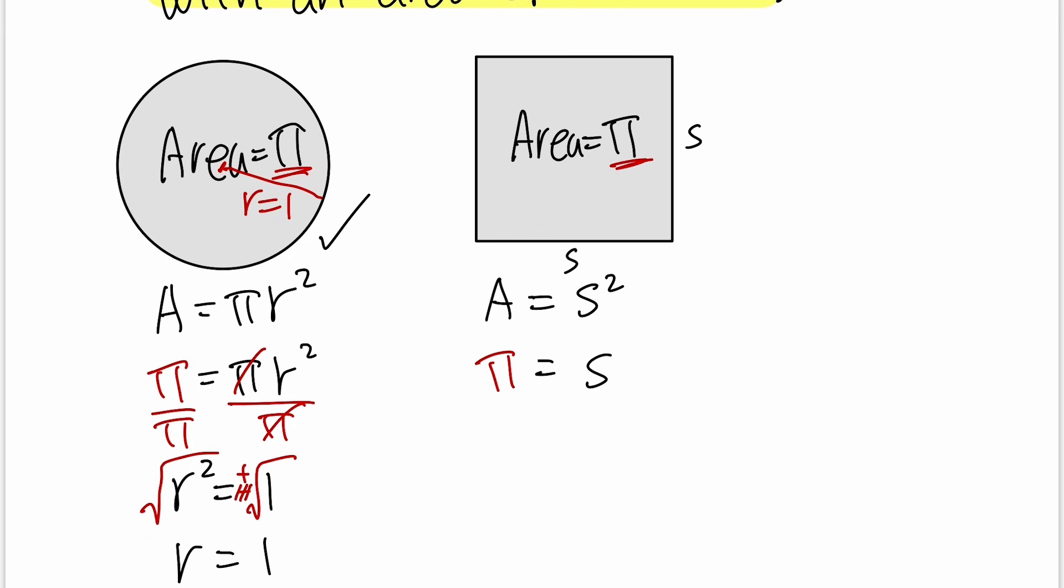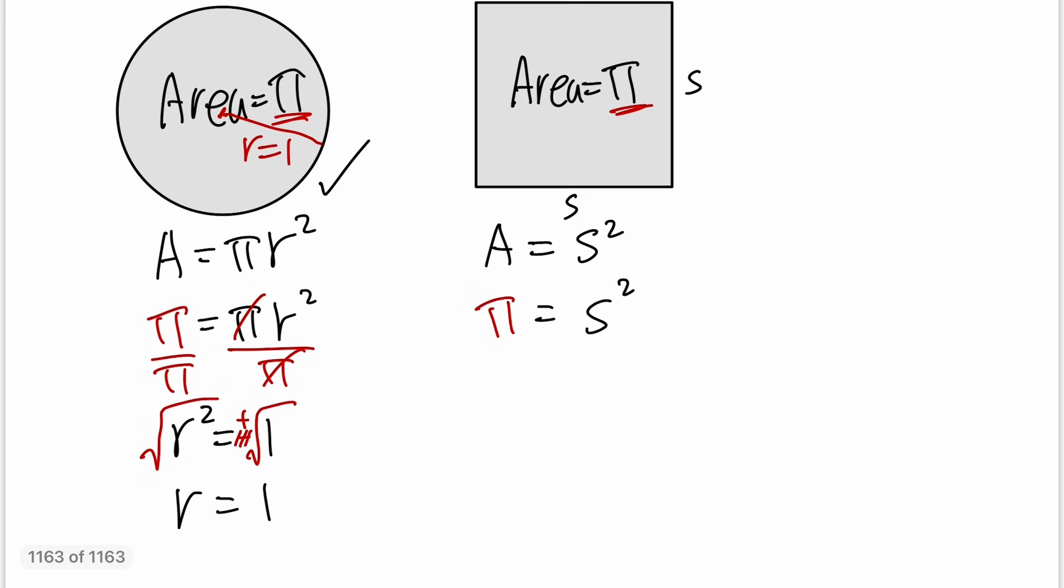That's equal to s². So from here we can just take the square roots to both sides, but maybe actually let me write it as s² equals π first. And then let's take the square roots to both sides. And again we put the plus or minus, get rid of the negative because we want positive sides, and then the square root cancels.